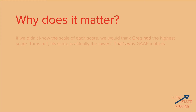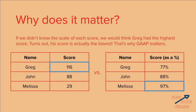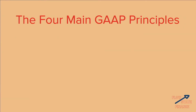So this is why it matters. Without knowing the scale, you'd think Greg had the highest score — but his score is actually the lowest. That's what makes GAAP so important. Once again, Greg's 116 is the highest without any context, but as a percentage, which standardizes all the scores, we can see that Melissa's score is actually the best.